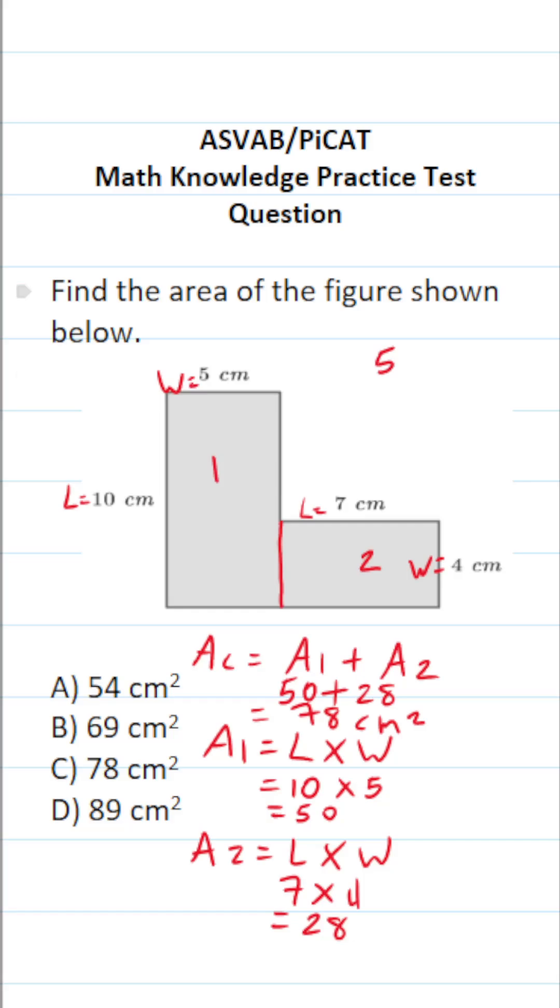And if you couldn't do that part mentally, you can always do it off to the side on test day. 0 plus 8 is 8. 5 plus 2 is 7. So the answer to this one is C, 78 square centimeters.